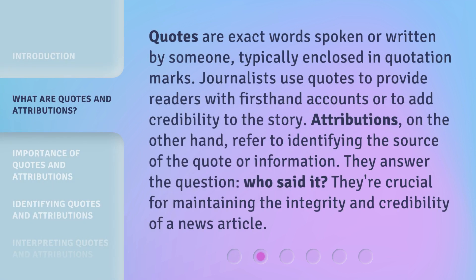Quotes are exact words spoken or written by someone, typically enclosed in quotation marks. Journalists use quotes to provide readers with first-hand accounts or to add credibility to the story. Attributions, on the other hand, refer to identifying the source of the quote or information. They answer the question: who said it? They're crucial for maintaining the integrity and credibility of a news article.